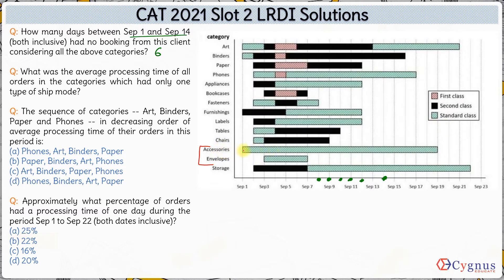Accessories has only one order from standard class, and envelopes also has only one order from standard class. For accessories, the processing time is from September 1 till September 19 — that's 18 days. For envelopes, the processing time is from September 3 to September 7 — that's 4 days. The average is (18 + 4) / 2 = 11 days.